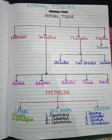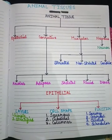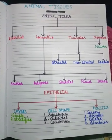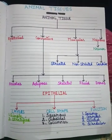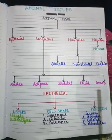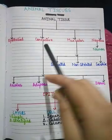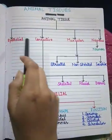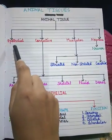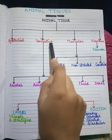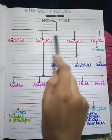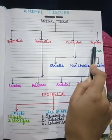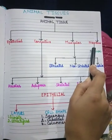Today's topic is animal tissues. Animal tissues are of four kinds: epithelial tissue, connective tissue, muscular tissue, and nervous tissue.